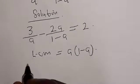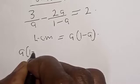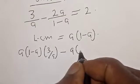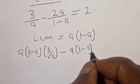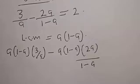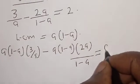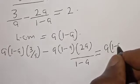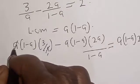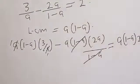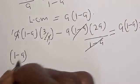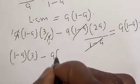Then let's multiply all through by the LCM. We have a into 1 minus a, multiplied by 3 divided by a, minus a into 1 minus a multiplied by 2a divided by 1 minus a, is equal to a into 1 minus a multiplied by 2. Then let's open the bracket — the a cancels, and 1 minus a cancels.